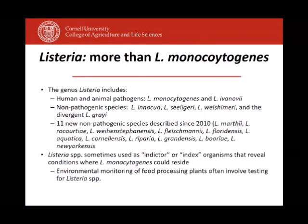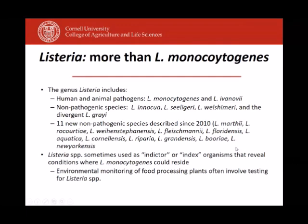It's important to remember that Listeria is more than just Listeria monocytogenes. Listeria monocytogenes is the pathogen that causes human disease, but there are other Listeria species such as Listeria innocua and Listeria saligarii, as well as 11 other species described since 2010. Testing in food processing plants often uses Listeria species as indicators. If we find Listeria species in an environmental monitoring program, it suggests conditions where Listeria monocytogenes could reside and be a problem. So when we find Listeria, we react as if it were Listeria monocytogenes and put in place control strategies.